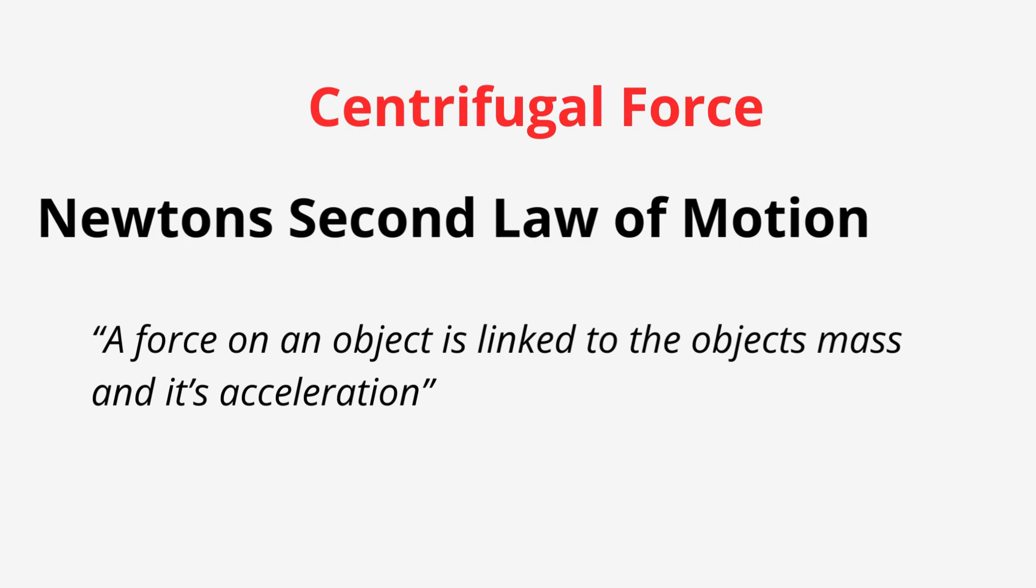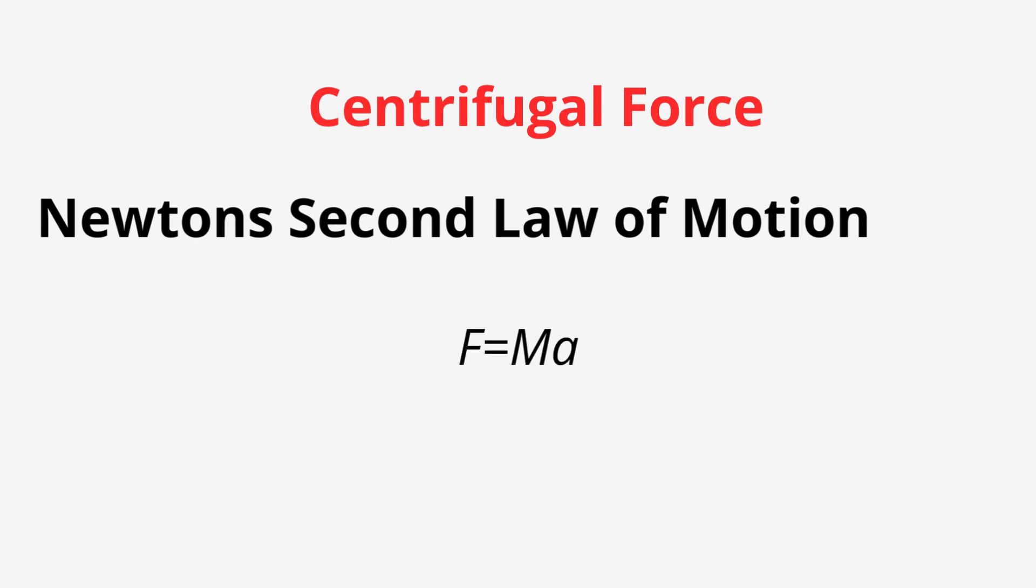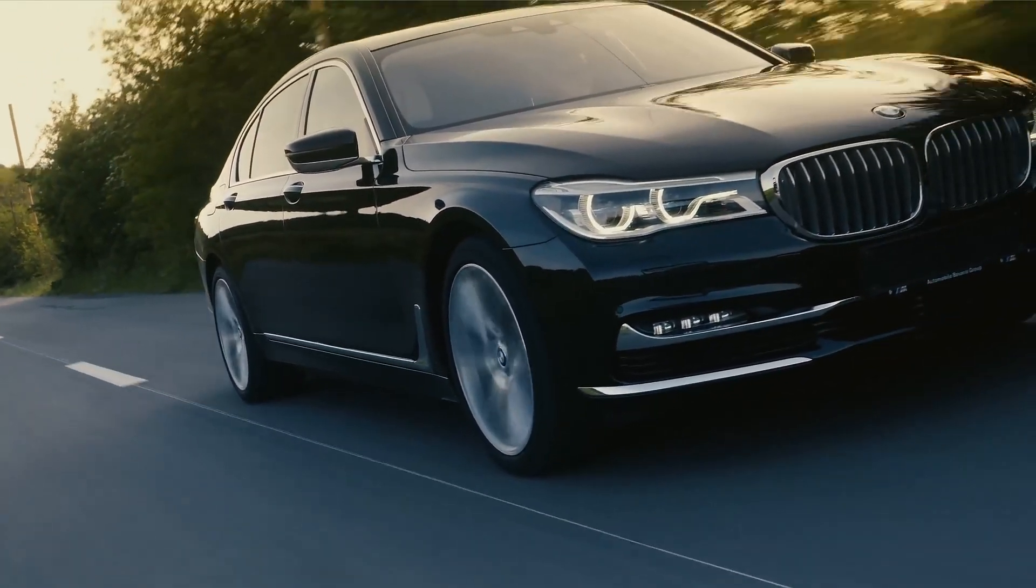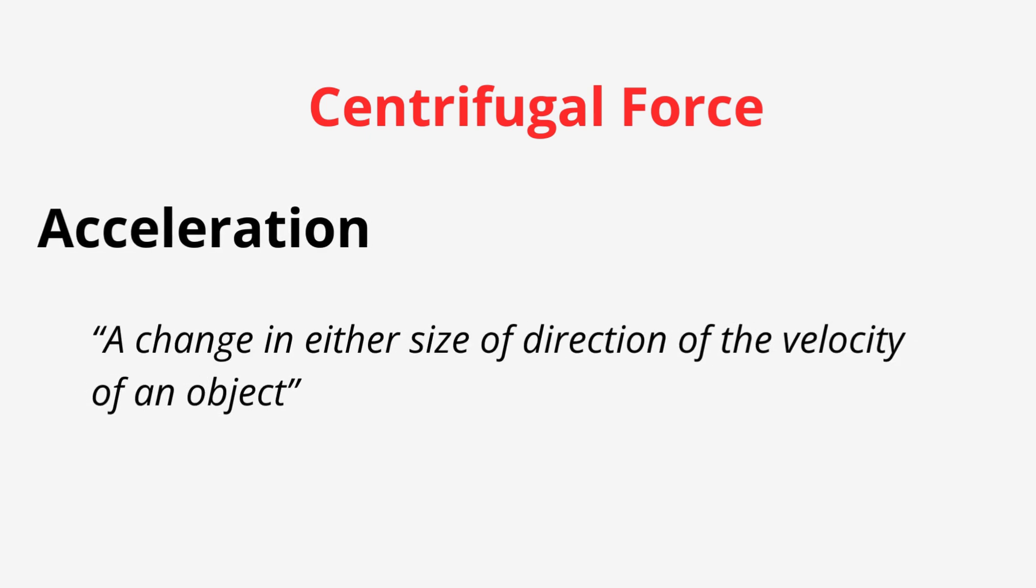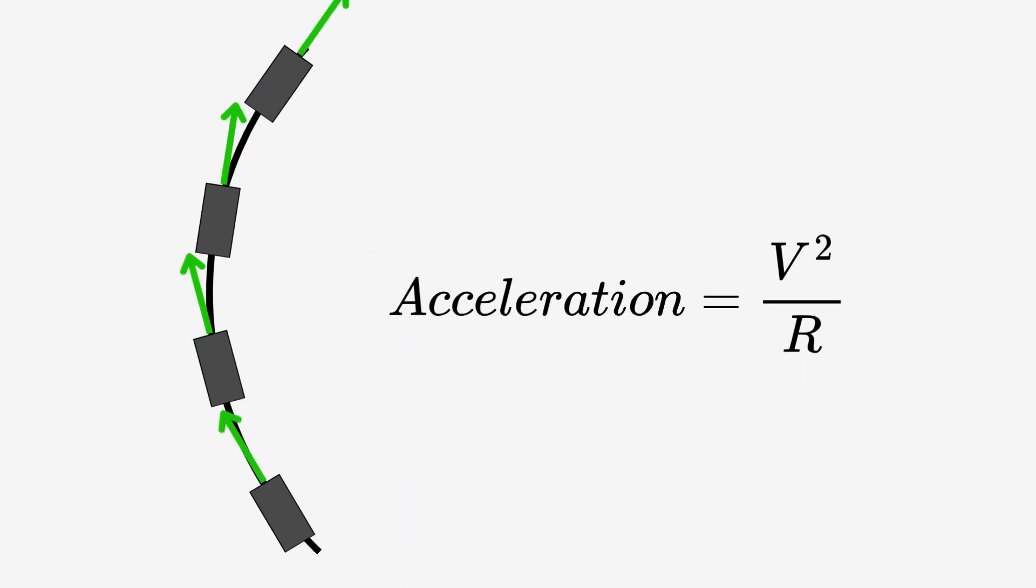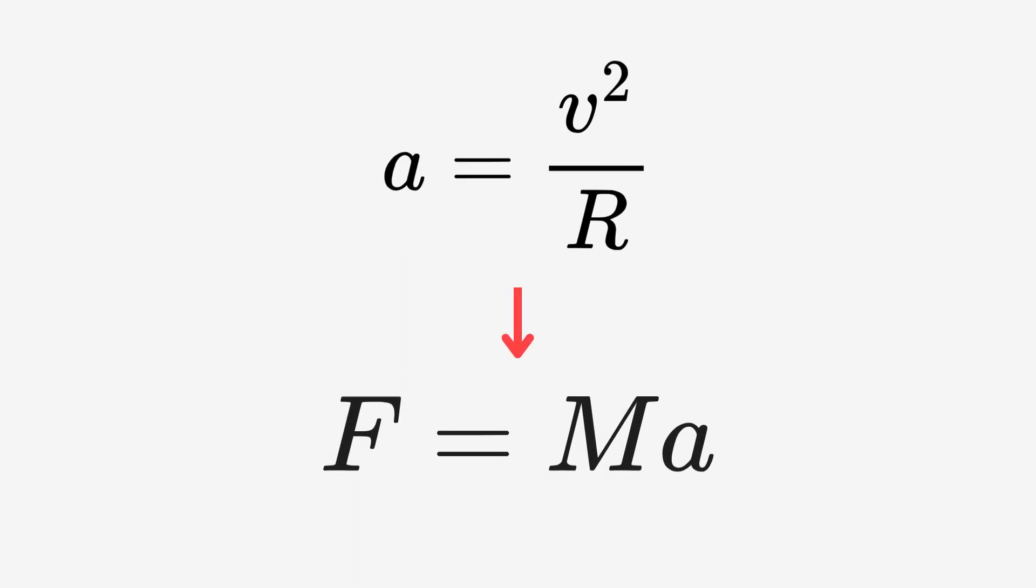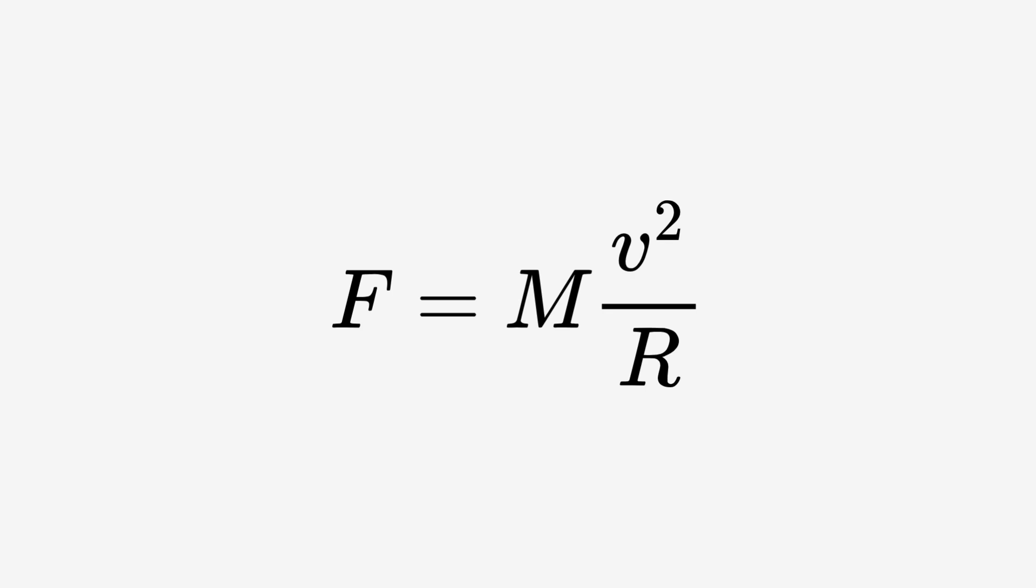Now, I left this until last as it requires a little explanation of how we determine this force. Newton's second law states that a force on an object is linked to the object's mass and its acceleration. This gives the famous, to engineers and science people at least, equation F equals MA. We all know acceleration as when something changes speed, like in a car. However, in the world of engineering and physics, acceleration is actually defined as the change in either the size or direction of the velocity of an object. Velocity is a speed with a direction. Our train is going around a curve. Even when it's going around a curve at a constant speed, it's still changing direction. So, by the definition of acceleration I just introduced to you, it is accelerating. This acceleration is defined as the speed squared divided by the radius. So, if we sub this into our F equals MA equation, we get the centrifugal force as M times V squared over R.